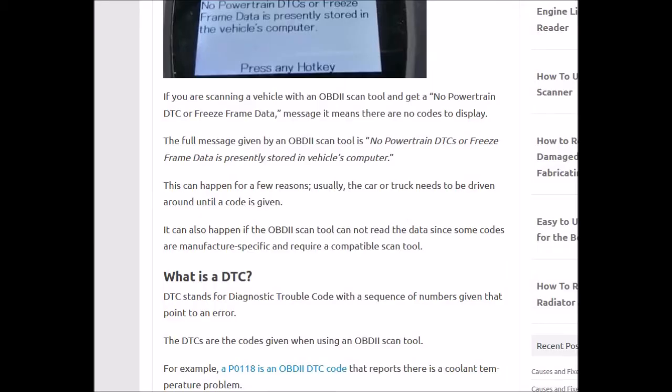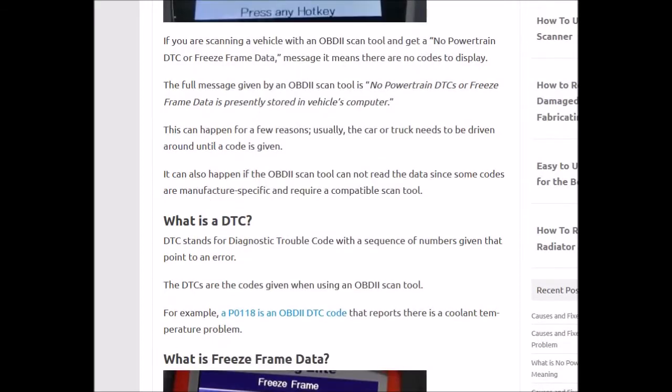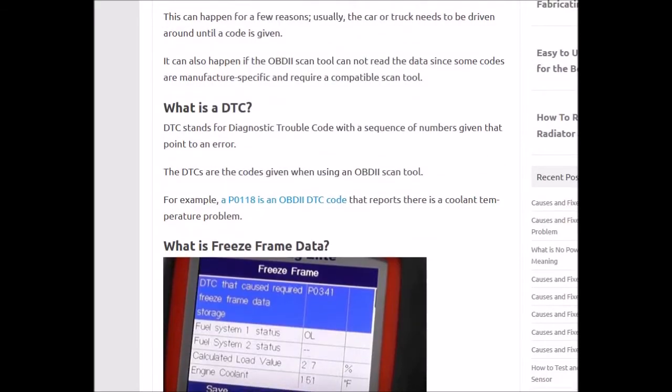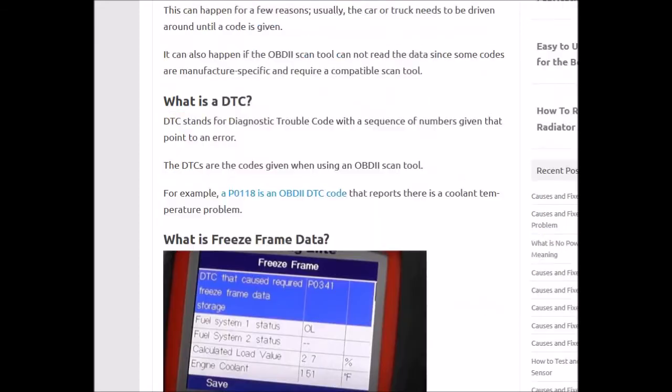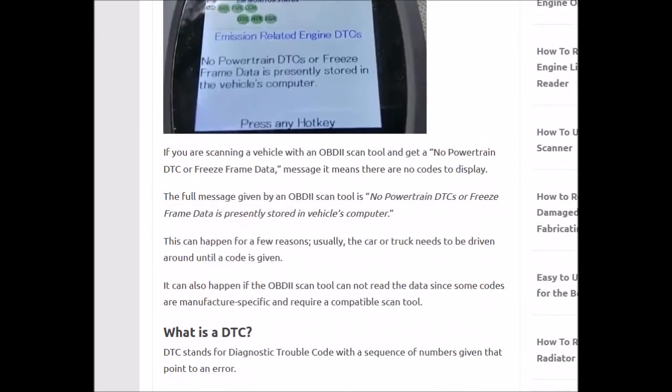The OBD2 scan tool doesn't see anything to read. And what is freeze-frame data? Freeze-frame data gives a snapshot of how everything was working when the error occurred — sensors and everything else. So if you go back and look at the freeze-frame data, you can often find what went bad.